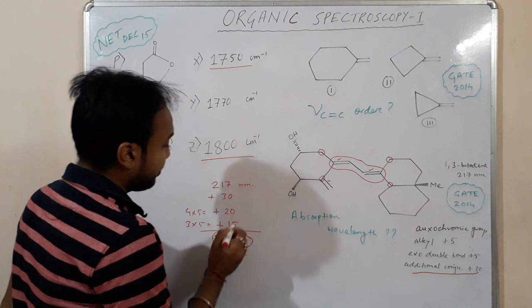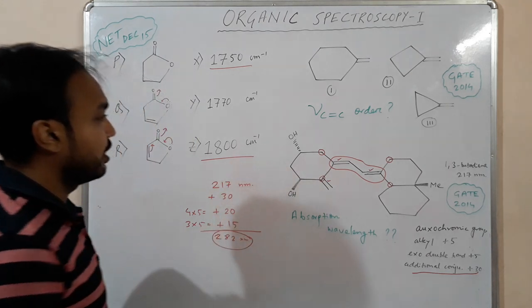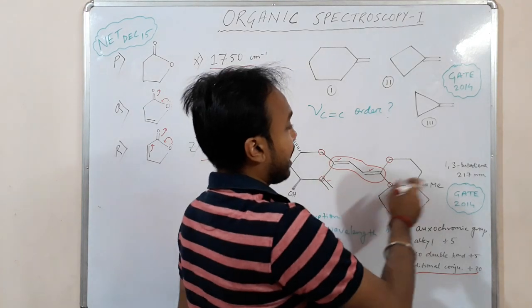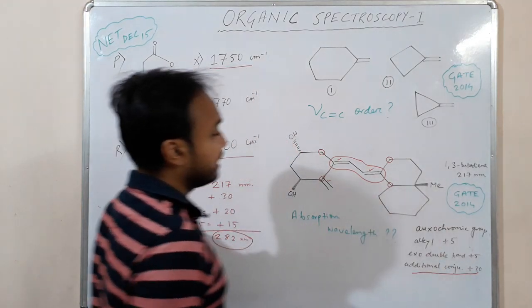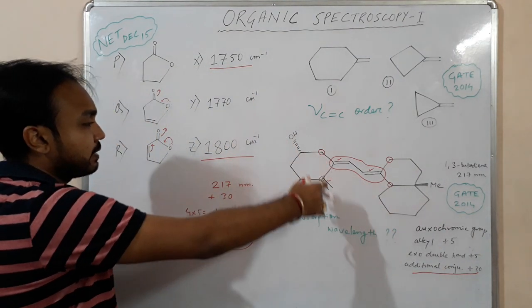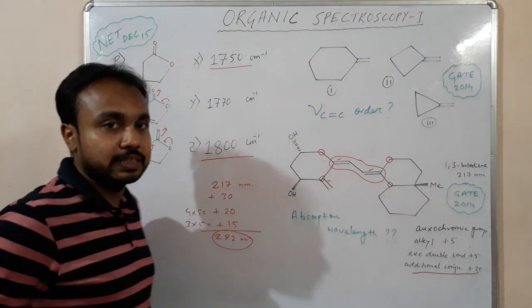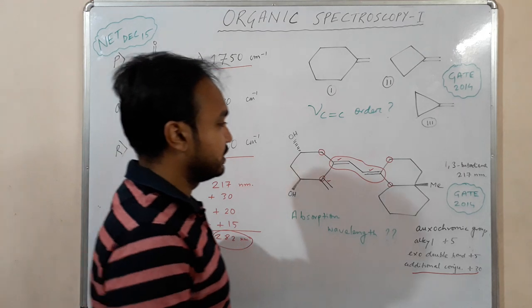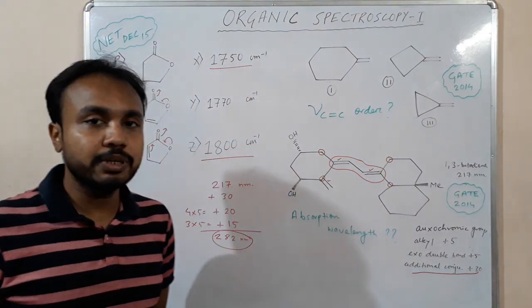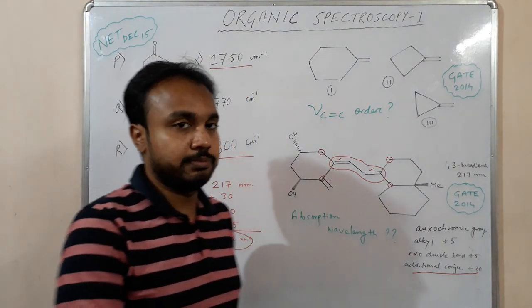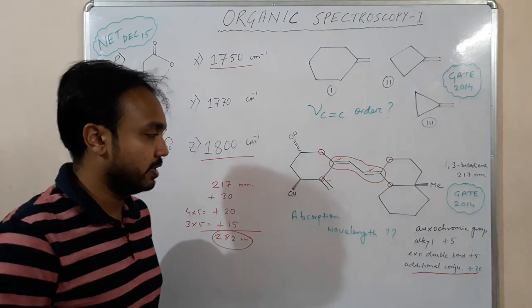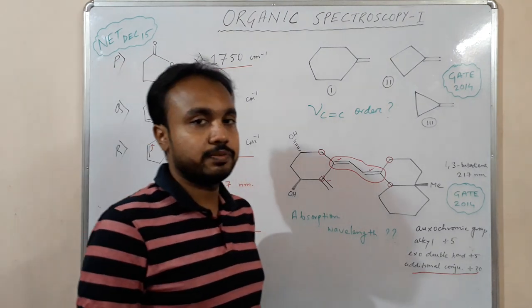From here you can see that for a simple diene system we have 217 nm, and when we apply extra conjugation in the system there will be a bathochromic shift, meaning the wavelength increases.